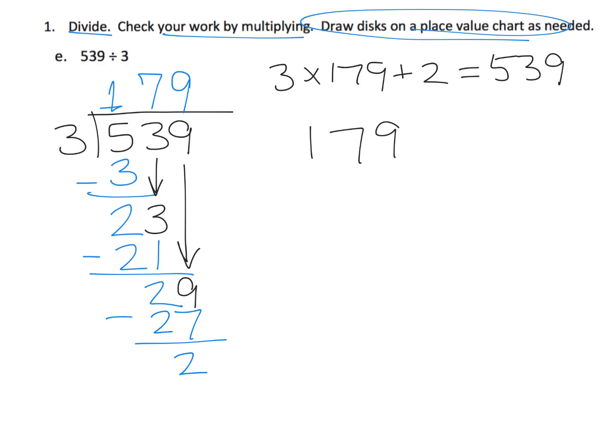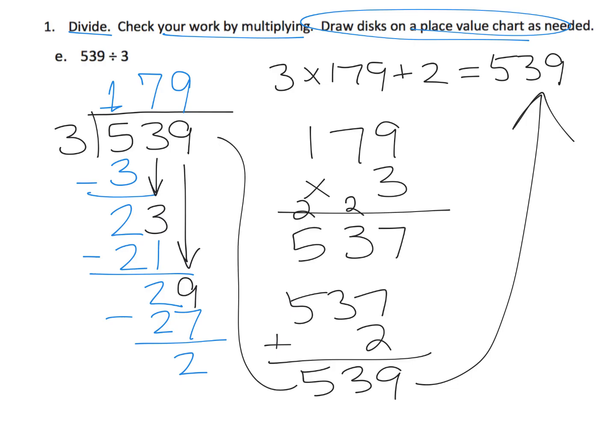And we're going to add in the remainder of two to make sure that we get 539. All right, so let's do that. 179 times 3 gives us 3 times 9 is 27. So I'm going to put the 2 here, the 7 here. So 3 times 70, or 3 times 7 tens, is 21 tens plus 2 more tens is 23 tens. So I'm going to put the 3, carry the 2. So that's two hundreds. So now we have 3 times 100 is three hundreds plus two more hundreds. It gives us five hundreds. So that's 537 plus the extra two. Sure enough, gives us the 539 we wanted to end up with. I didn't draw the disks, but teachers, remember, you could be drawing the disks for this problem if you want, or if your students want.